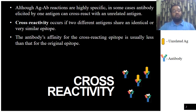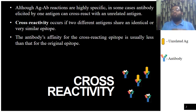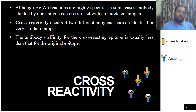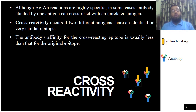One thing to keep in mind whenever performing an immunological assay is cross-reactivity. Cross-reactivity is a phenomenon that arises when an antibody generated against a particular antigen is found to bind to more than one type of antigen. A single antibody may bind to a related antigen for which it was developed, but that same antibody may also bind to an unrelated antigen. When such a phenomenon arises we call it cross-reactivity.